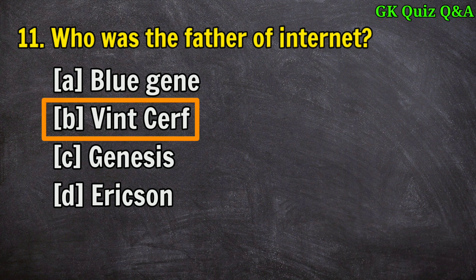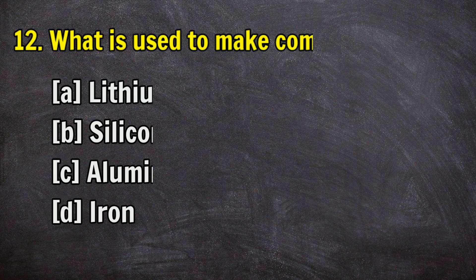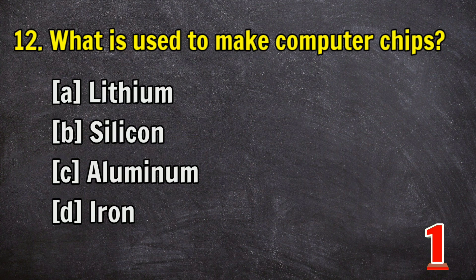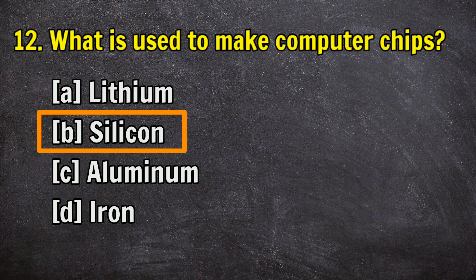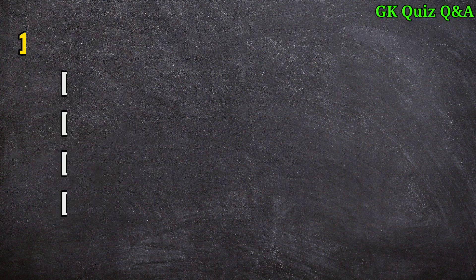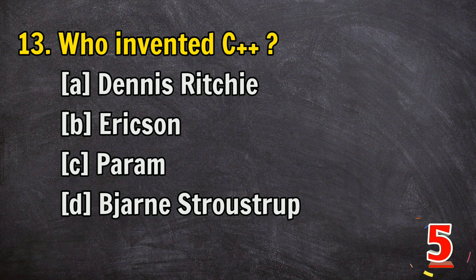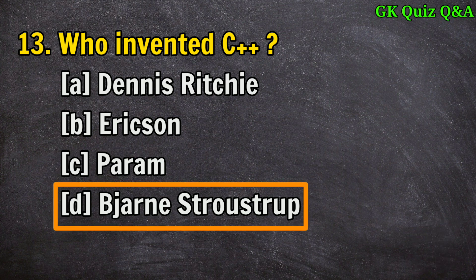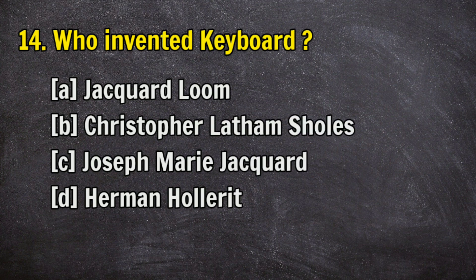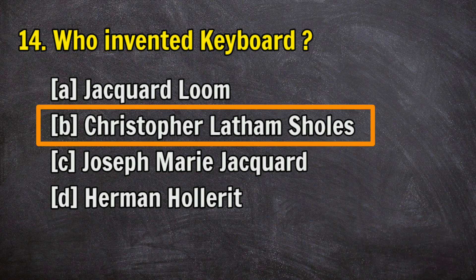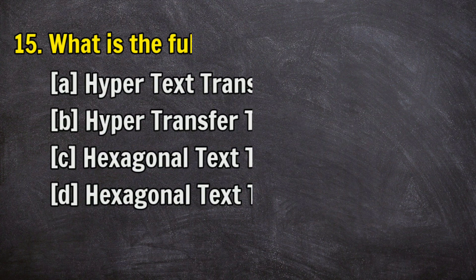Question 10: Who was the founder of Bluetooth? Answer B: Edison. Question 11: Who was the father of the internet? Answer B. Question 12: What is used to make computer chips? Answer B: silicon. Question 13: Who invented C++? Answer D: Bjarne Stroustrup.